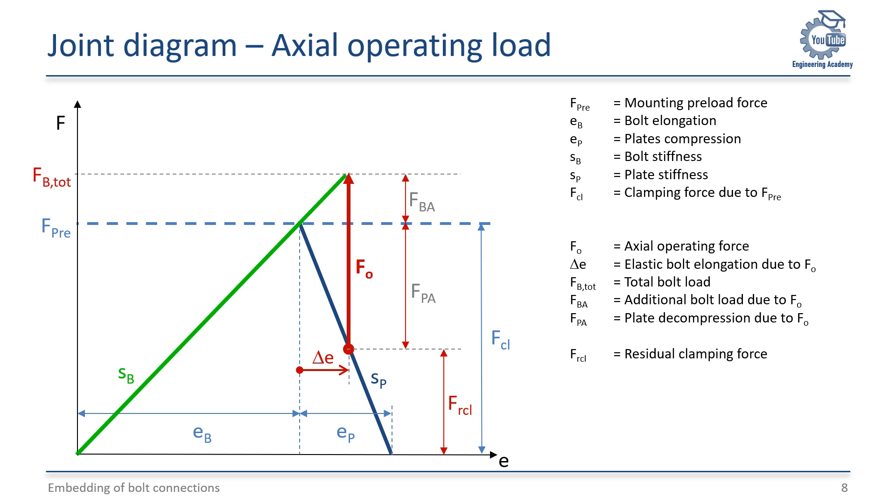If the residual clamping force FRCL becomes smaller than the required clamping force, the bolt connection can no longer reliably fulfill its function. A properly designed bolted connection takes into account the operational clamping force reduction due to FPA, ensuring that the remaining clamping force FRCL always remains greater than the required clamping force.